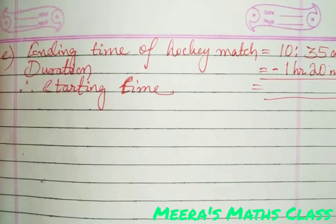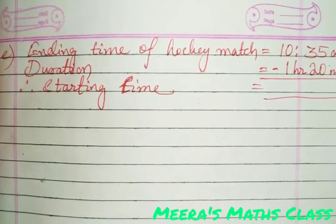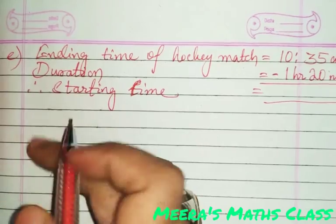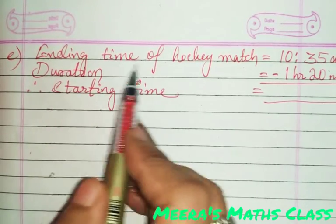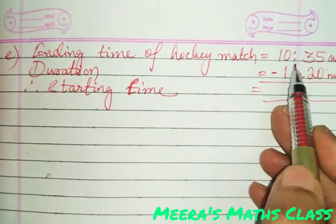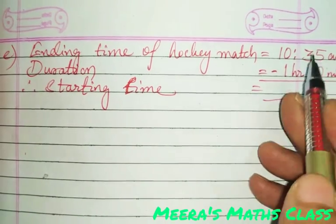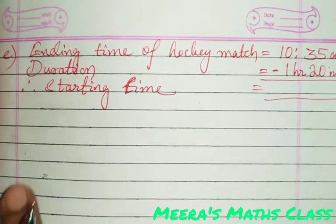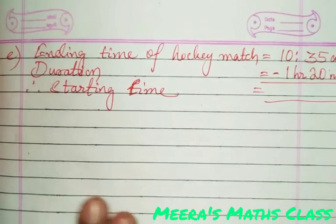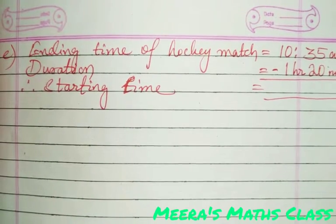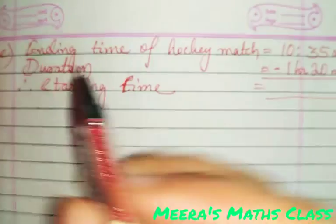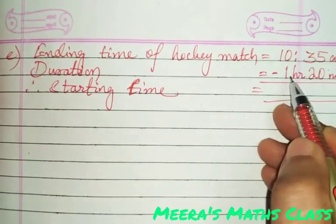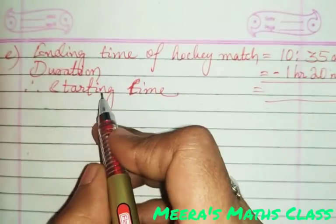I have written the steps for you. The ending time of the hockey match is equal to 10:35. You always write the ending time on the top because it is greater than the starting time. The duration is equal to 1 hour 20 minutes.